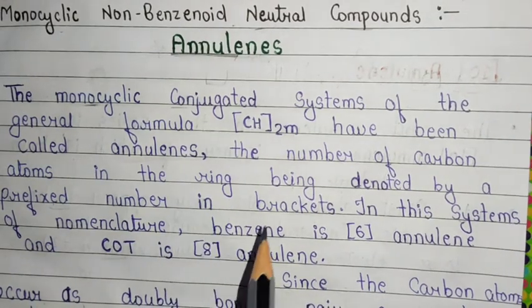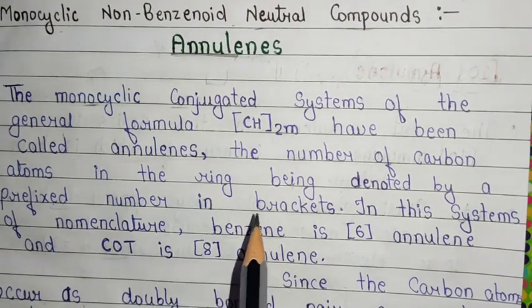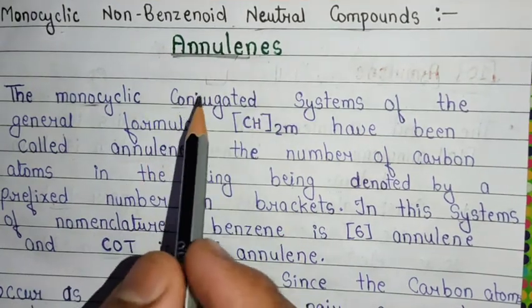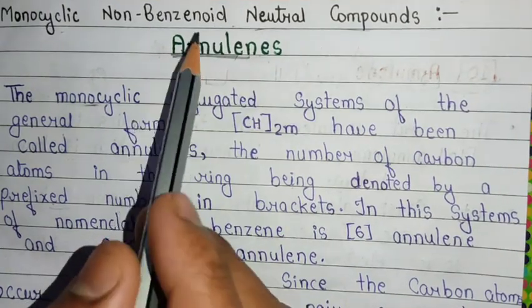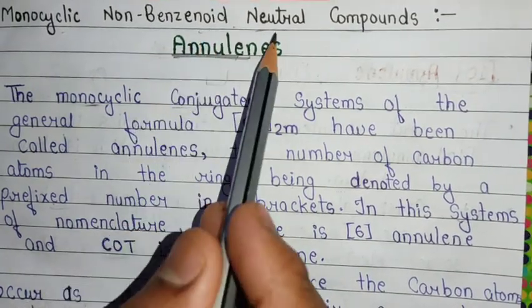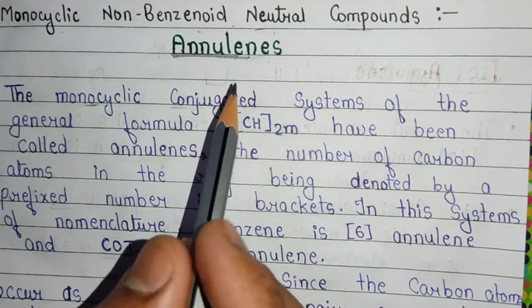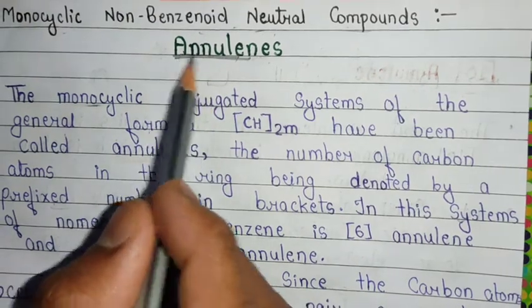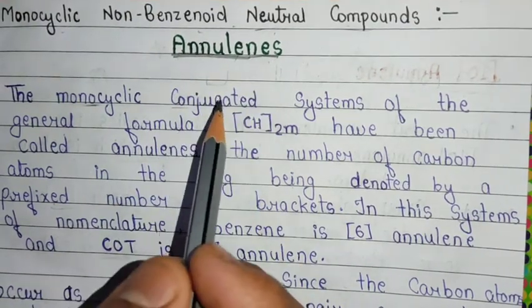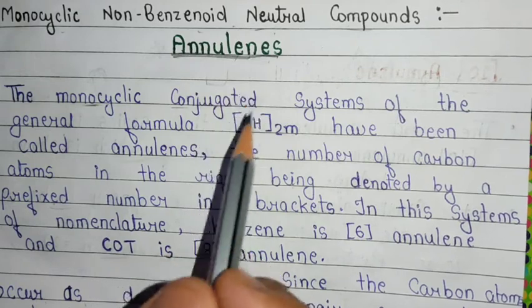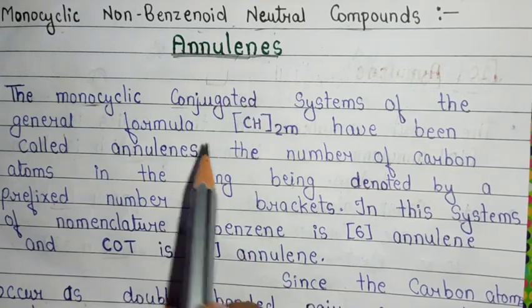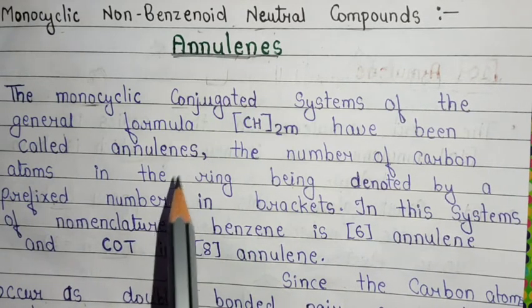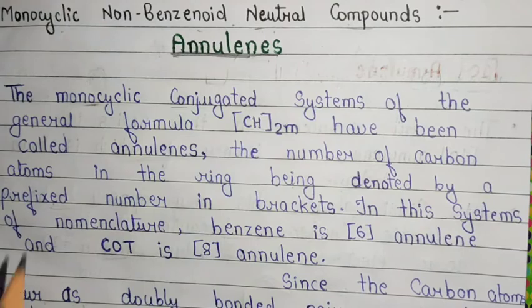Hello everyone, welcome to my channel. Today we are going to discuss about annulins. Annulin is one kind of monocyclic non-benzenoid neutral compound. In this particular video we will discuss the basic concept of annulins and I will provide you handmade notes which are definitely going to be very helpful for your exam preparations. So what is annulin?